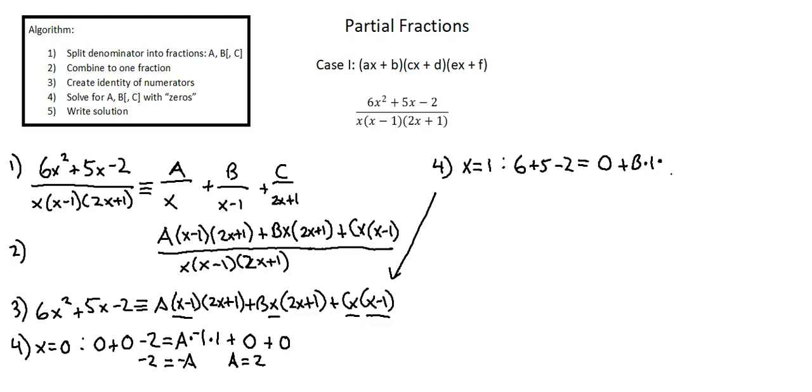2 times 1, replacing the x with 1, 2 times 1 plus 1 is 3. And again the C term is going to become zero because of the x minus 1 factor. When we input the 1, 1 minus 1 is 0 and the C term disappears. So now we can simplify the left side of the equation: 6 plus 5 minus 2 is 9 equals B times 1 times 3 is 3B and we have simplifying B equals 3.